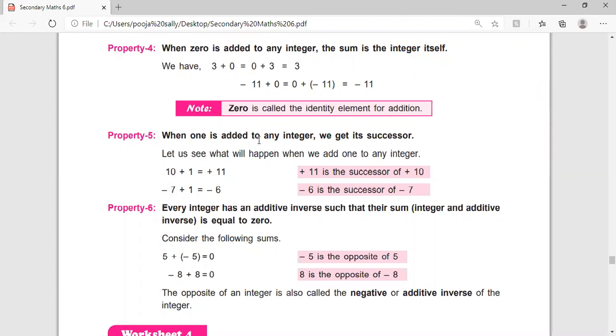Next is when one is added to any integer, we get its successor. If there is integer 10 and we add plus one to it, then we get 11. And 11 is the successor.